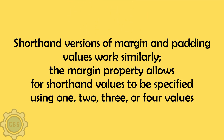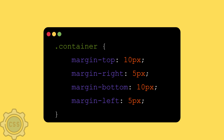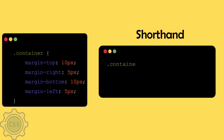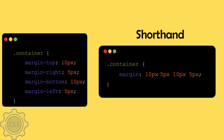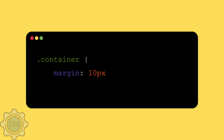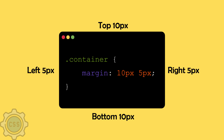Shorthand versions of margin and padding values work similarly. The margin property allows for shorthand values to be specified using 1, 2, 3, or 4 values. For example, you can write top, right, bottom, and left separately, or you can simply say margin and give different values. If you give one value — say 10 pixels — it is applied to all four sides. When you give four values, the first is for top, second for right, third for bottom, and fourth for left. If you give two values like 10px and 5px, then the first applies to top and bottom, and the second to right and left.